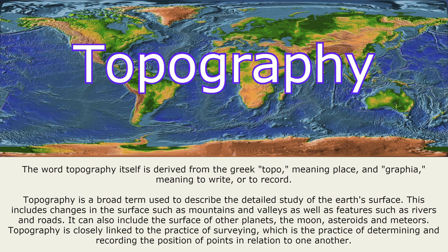Topography can also include the surface of other planets, the moon, asteroids and meteors. It is closely linked to the practice of surveying, which is the practice of determining and recording the position of points in relation to one another.